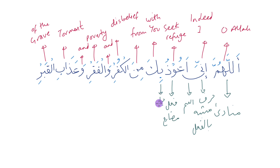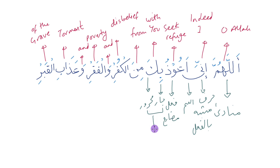B is harf jar, and then k is the majroor — it's a dameer. Jar and majroor put together — where does it become connected to? The mudari'. Excellent. Min is jar — put that there.